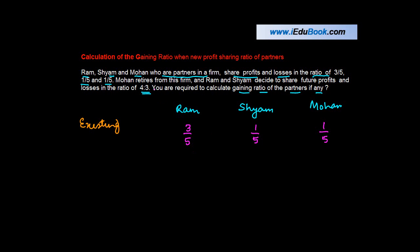Mohan retires from the firm and Ram and Sham decide to share the future profits and losses in the ratio of 4:3. So the new profit sharing ratio between Ram and Sham is given as 4:3 or you can write this as 4/7 and 3/7, seven being the sum of the two numerators.